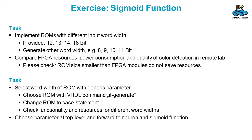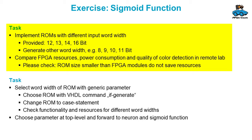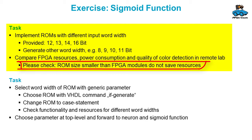Now we come to the exercises that you can do with the sigmoid function. First, you can implement the ROMs with different input word widths. We provide MIF files for 12, 13, 14, and 16 bit. You can use them or you can generate other word widths such as 8, 9, 10, or 11 bit — whatever you think is appropriate. Then compare FPGA resources, power consumption, and also the quality of the color detection. You can also check that if you make the ROM size smaller than the FPGA modules, you don't save resources.